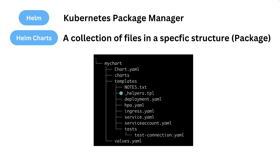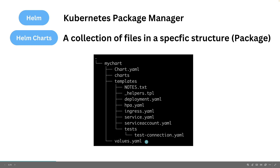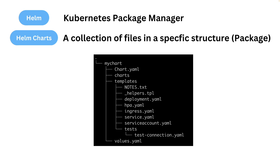Then you have helpers.tpl, which is a file where you can put functions that can be invoked from the other template files. You also have a tests directory where you can put manifest or YAML files — Helm will deploy the application and then run those tests, though I haven't seen this feature used that much. And then you have values.yaml which contains the default values for your application.